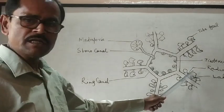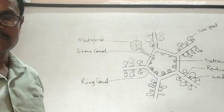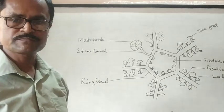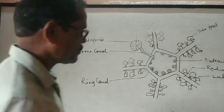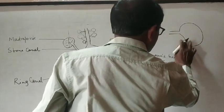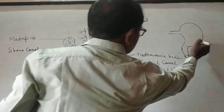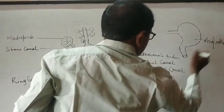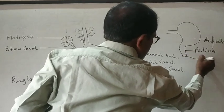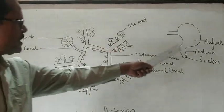Now, the lateral canals end into a structure called tube feet. Tube feet are very characteristic features, which mainly perform the functions of locomotion. And it consists of three parts. One sac-like structure called ampulla. This part is known as podium. And this is sucker. That means, the tube feet consist of three parts: ampulla, podium, and sucker.